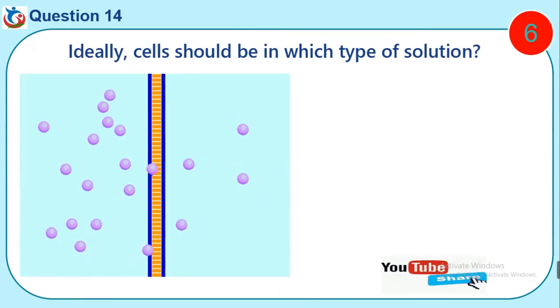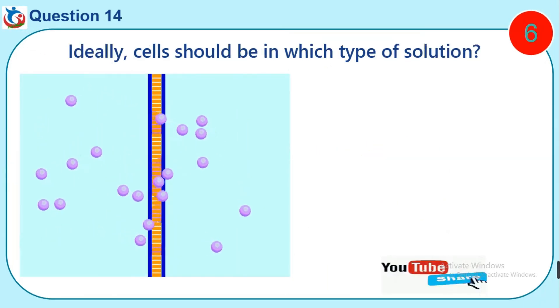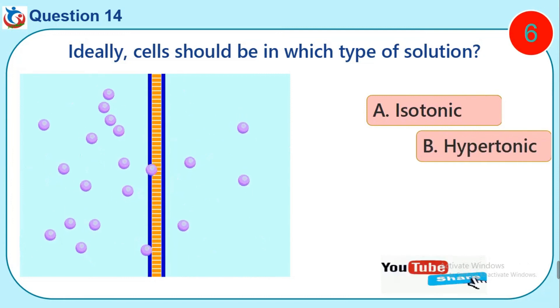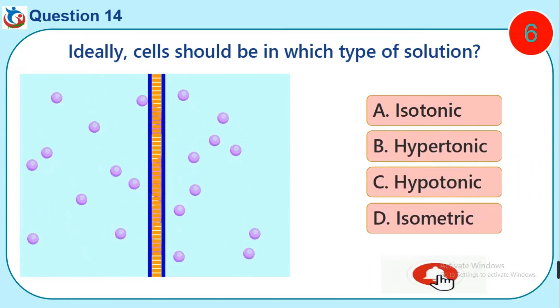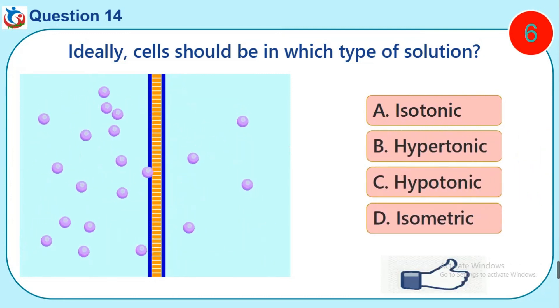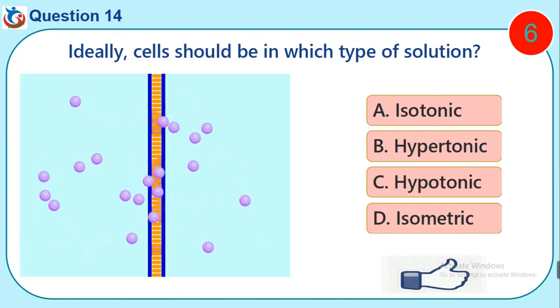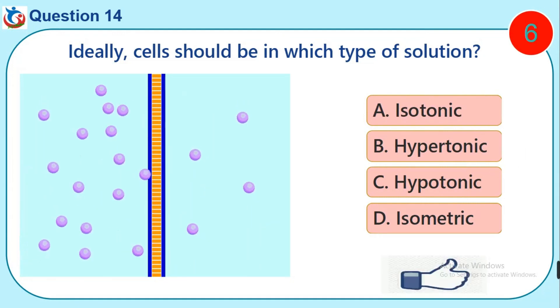Question 14. Ideally, cells should be in which type of solution? A. Isotonic. B. Hypotonic. C. Hypotonic. D. Isometric.